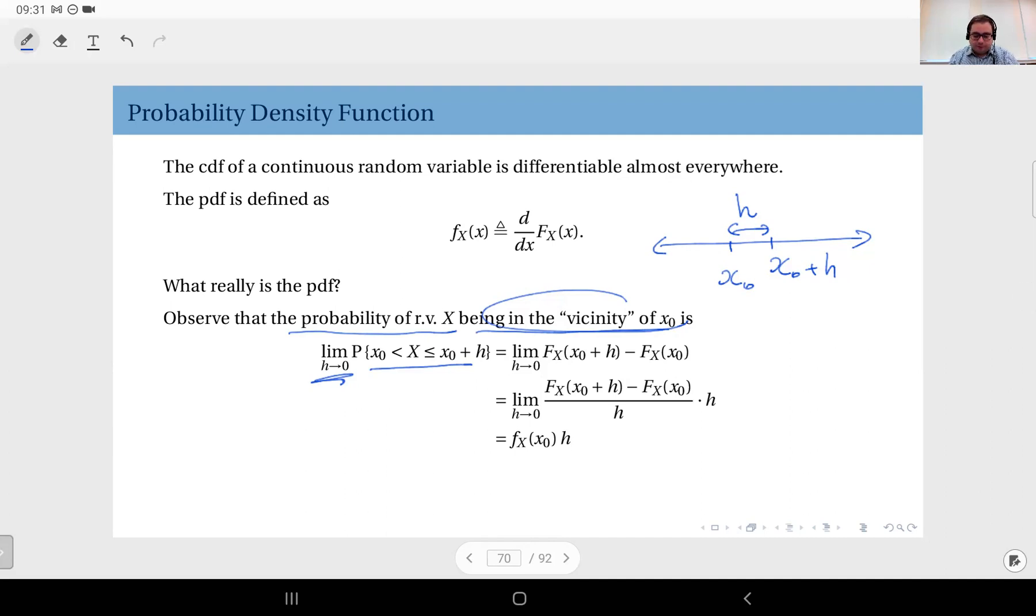Now by definition, I can write this probability as the limit h goes to zero of the CDF of X at this value minus the CDF of X at x_0. And now I'm going to multiply and divide this quantity by h. I can do that because I'm taking the limit as h goes to zero - since h is not zero itself, I'm just taking the limit, so I can divide it by h.